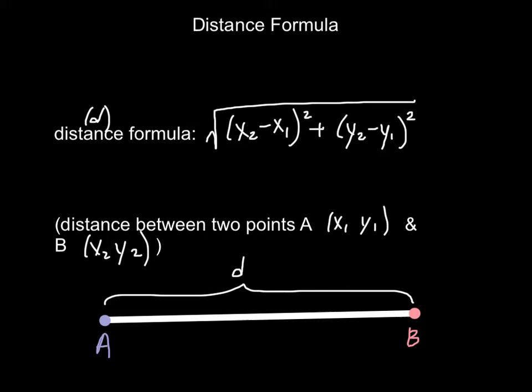Now each point has a set of ordered pairs, x₁ and y₁, and x₂ and y₂. The relationship between these points we call the distance, and we can use this formula. So the distance formula is the square root of the quantity x₂ minus x₁ squared, plus the quantity y₂ minus y₁ squared.